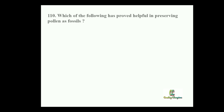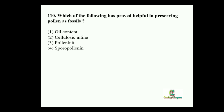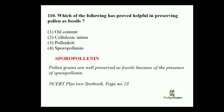Next question: Which of the following proved helpful in preserving pollen as fossils? Option 1: Oil content. Option 2: Cellulosic intine. Option 3: Pollen kit. Option 4: Sporopollenin. The answer is sporopollenin, because pollen grains are well preserved as fossils due to the presence of sporopollenin. Oil content has no role in preservation of pollen as fossils. Cellulosic intine is the inner sporodermal layer of pollen grain, and pollen kit helps in insect pollination.